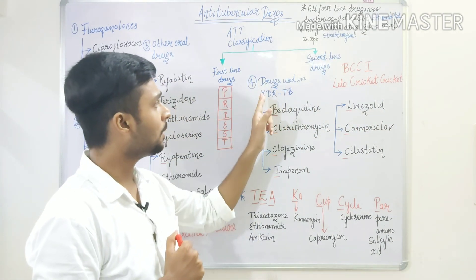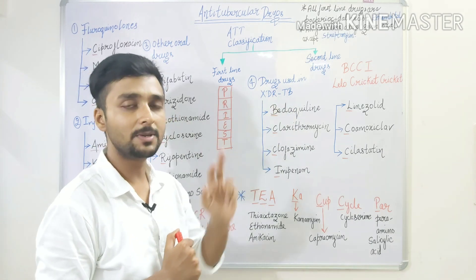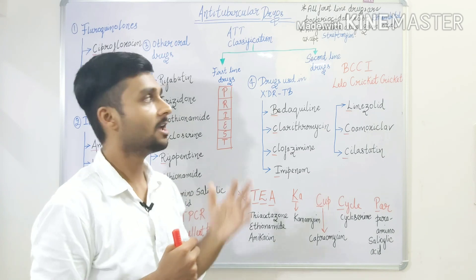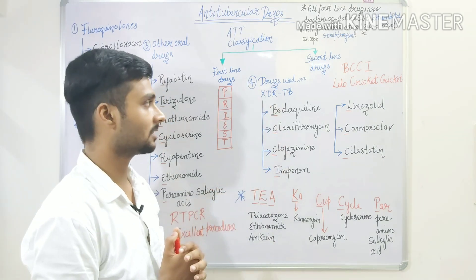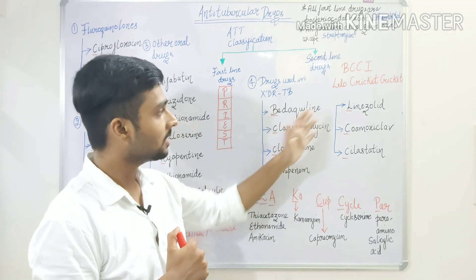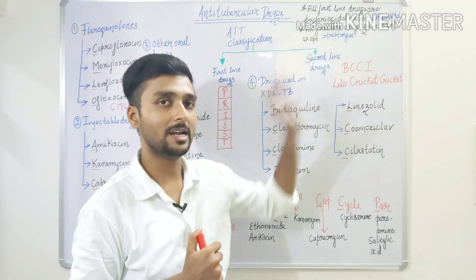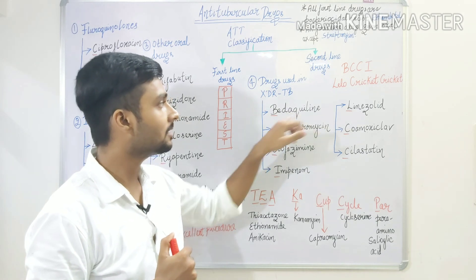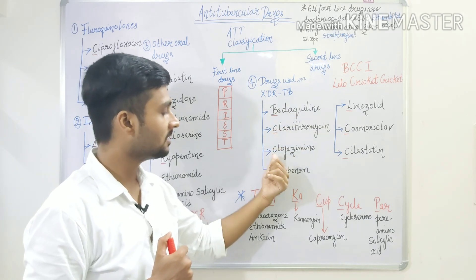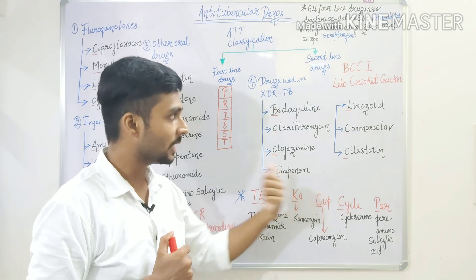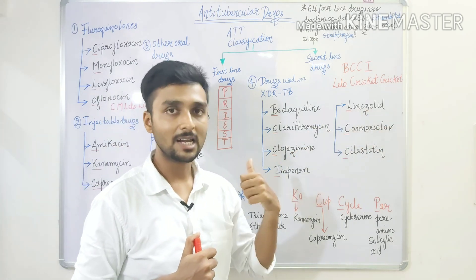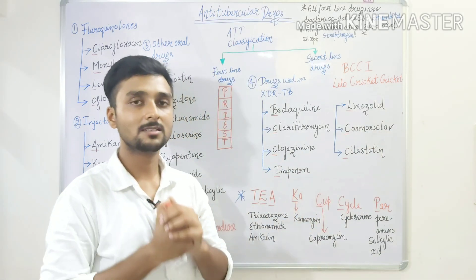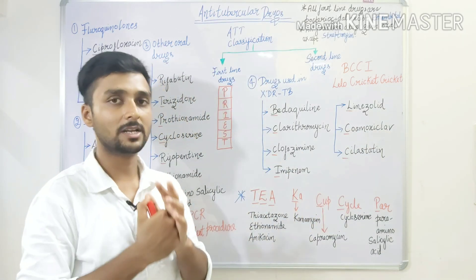Last is drugs used in multiple drug-resistant TB, which is TB that has become resistant due to many drugs. In these cases we can use these drugs. We remember all of them as BCCI Lelo Cricket. B for Bedaquiline, C for Clarithromycin, C for Clofazimine, I for Imipenem, L for Linezolid, C for Amoxicillin-Clavulanate, and C for Celastatin. BCCI Lelo Cricket.